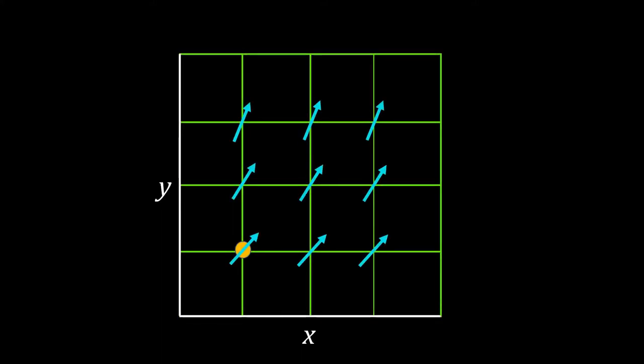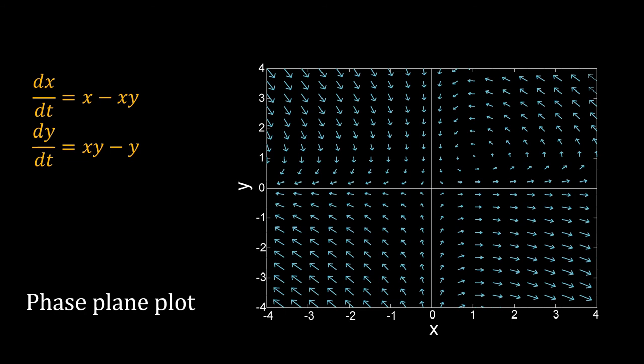Using this method, we can draw arrows at all the grid points. I have made the plot for the predator prey model. This diagram is called a phase portrait or a phase plane plot. In fact, this is a vector field. The arrows or the vectors are representing the direction of motion of the system.